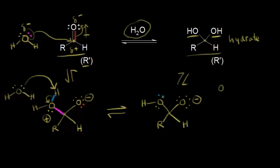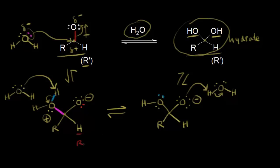Of course, another water molecule could come along. Water can function as an acid or a base. A lone pair of electrons on this oxygen takes this proton and leaves these electrons behind — and that would give us our final product, our hydrate. You could, of course, change this hydrogen to an R prime if you wanted to, giving you your hydrate or geminal diol.